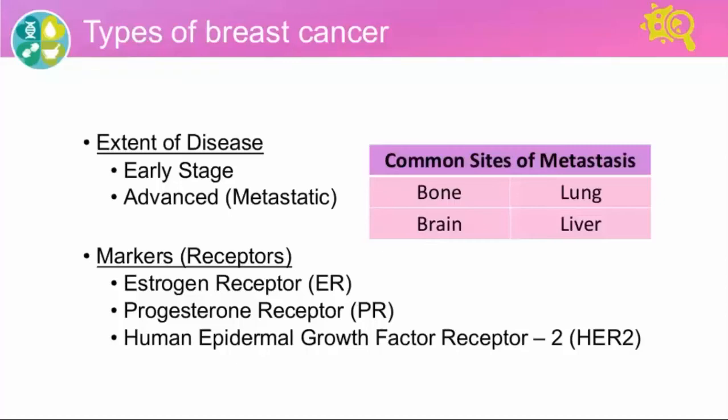Let's talk a little bit about the markers. These are receptors or markers — specific proteins or genes that cancer cells may express — and we can quantify them in a sample analyzed in the laboratory. Two very important ones are the hormone receptors: the estrogen receptor and the progesterone receptor, which are receptors for the female hormones estrogen and progesterone.